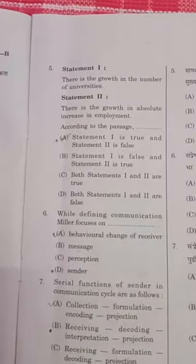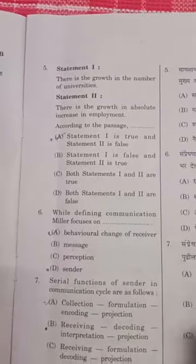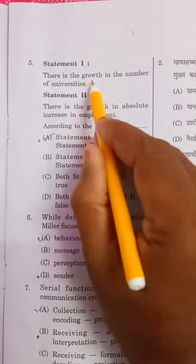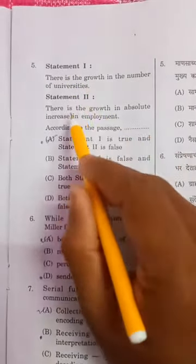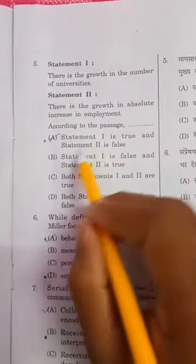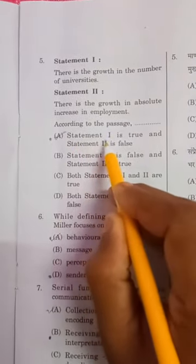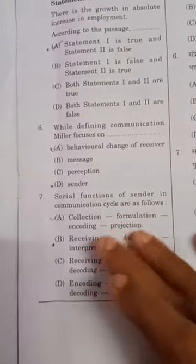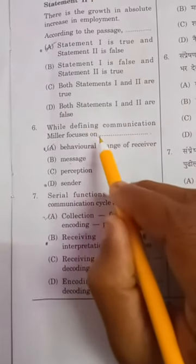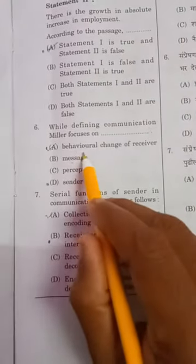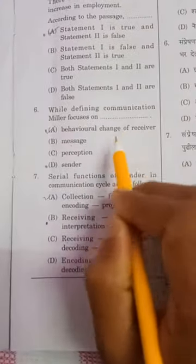Moving to the last question of the passage. Two statements are given: statement one — there is growth in the number of universities; statement two — there is growth in absolute increase in employment. As per the passage, statement one is true and statement two is false. Moving to the sixth question: while defining communication, Miller focuses on the behavior change of the receiver, so option A is the right answer.